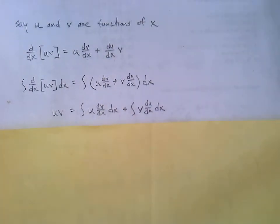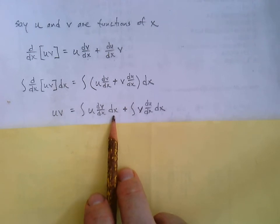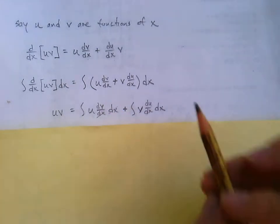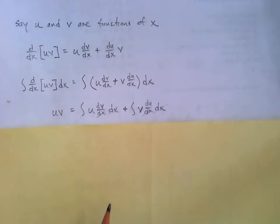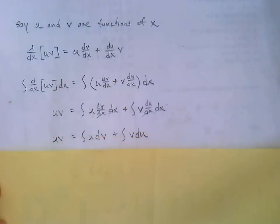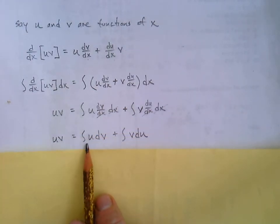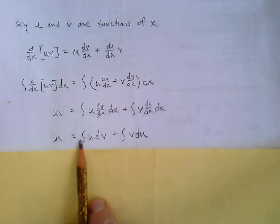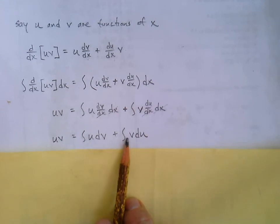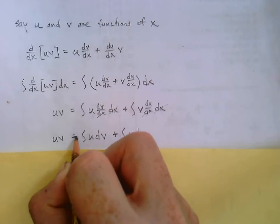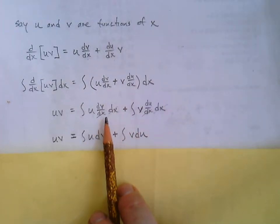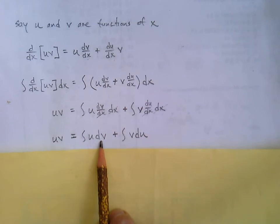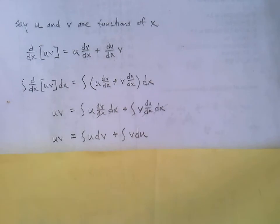Something convenient about Leibniz notation: dv/dx times dx — those dx's cancel out, and similarly for du/dx times dx. So we simplify to: uv = integral of u dv + integral of v du. Our differentials are now dv and du rather than dx, but that works out.